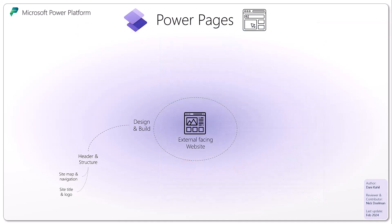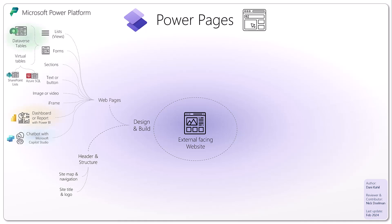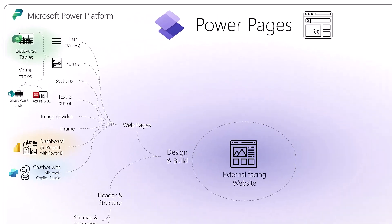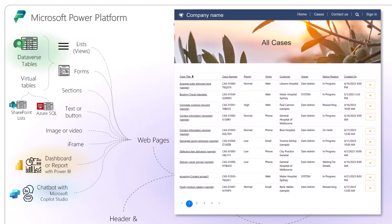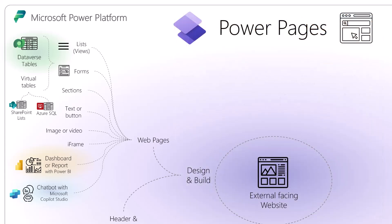From there you start building content by creating web pages, which are made of components. Lists are composed of views in the old terminology — they list your records from a database. Dataverse records are stored natively in Dataverse, but you can also use virtual tables and use SharePoint lists and Azure SQL through virtual tables.